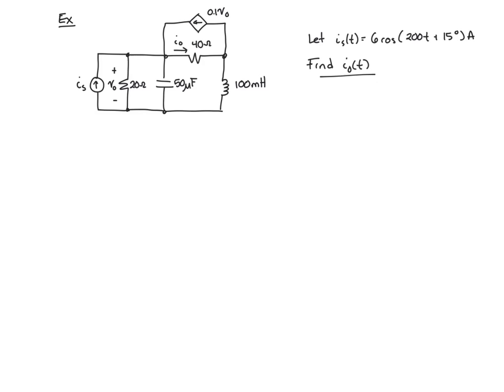So let's take this example circuit where we have a couple sources, both are current sources, one independent source Is. Is is given as a sinusoid, specifically 6 cosine 200t plus 15 degrees in units amps. We have a dependent current source that's dependent on V sub zero, so it's 0.1 V0 amps of current, where V0 is a voltage across this 20 ohm resistor, which happens to also be in parallel with that other source and the 50 microfarad capacitor.